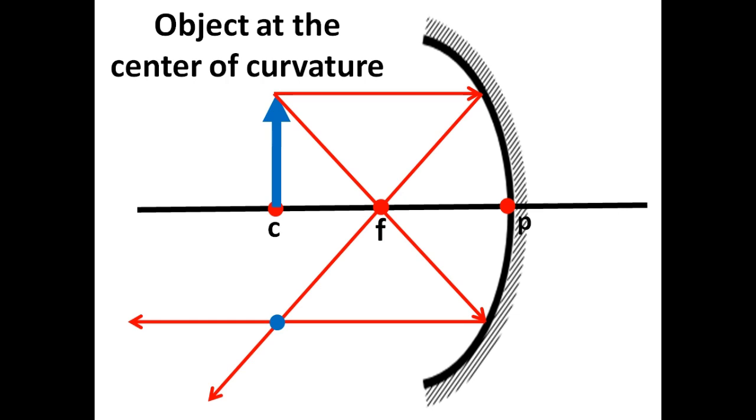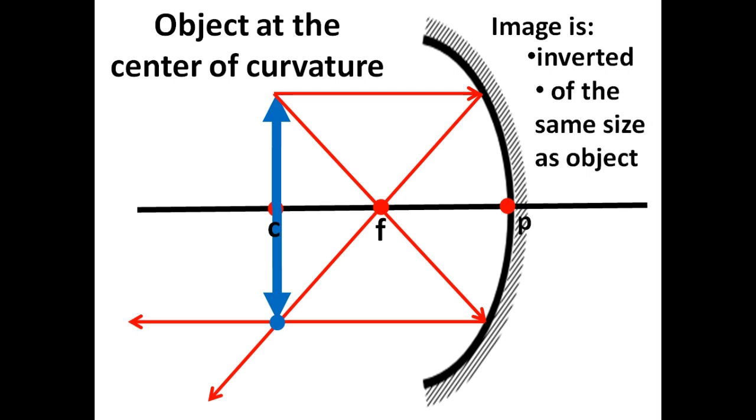Correct. And that is where the image is formed. Wow, that image is still inverted. Correct. How about the size? Is it bigger or smaller than the object? It appears to me that it is of the same size as the object. That is also correct. And where is it formed? It is formed at the center of curvature C.